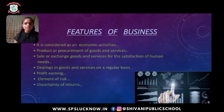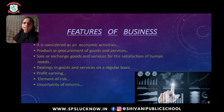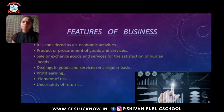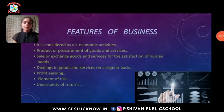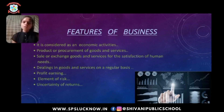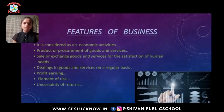Fifth, dealings in goods and services on a regular basis — business involves dealing in goods and services regularly. One single transaction of sale or purchase cannot be considered a business activity. Next, profit earning is the main objective of business activity; no business can survive for a long time without earning profit. Element of risk — risk is an essential feature of business, caused by unfavorable events such as earthquakes, floods, dishonesty of workers, etc. Next, uncertainty of returns — the money invested in our business has no certainty of return.